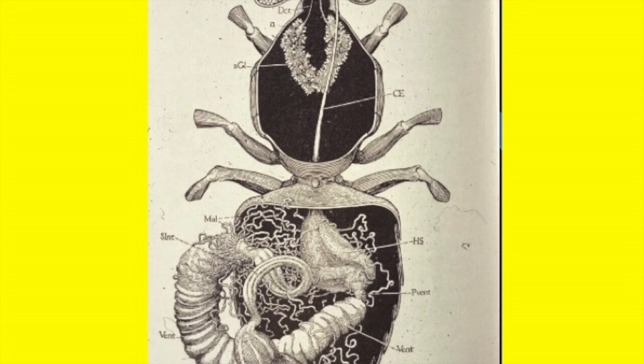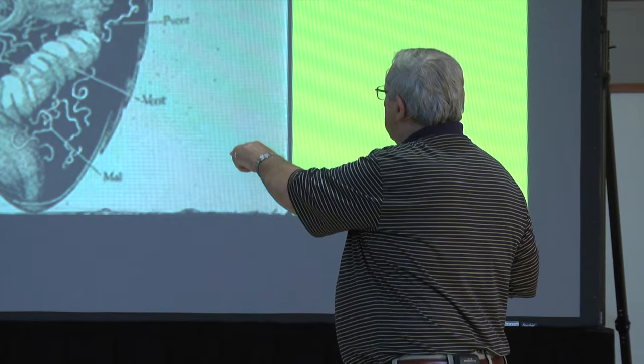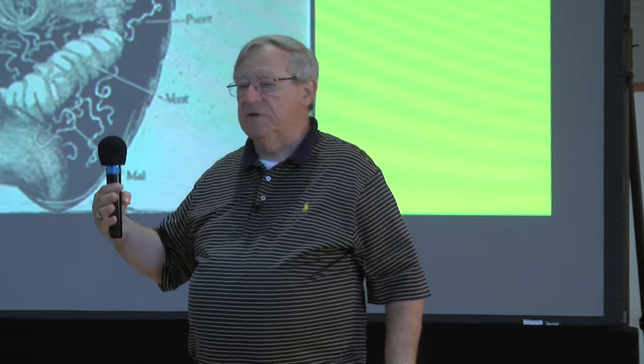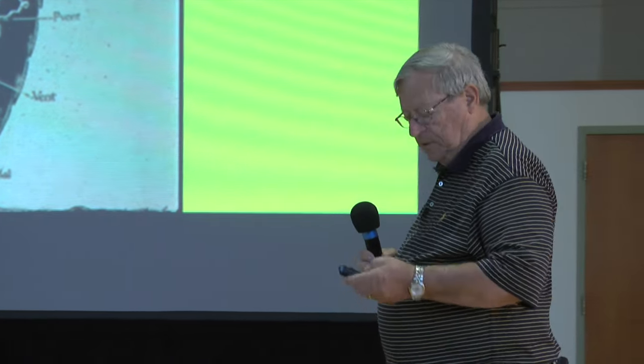When the bee removes all of the nectar, it temporarily stores it in a structure in the anterior part of the abdomen — we call that the honey stomach, or in insects in general, the crop. It's a temporary storage organ. When the honey stomach becomes filled with nectar, the forager returns to the hive to disperse its load of nectar to the house bees.